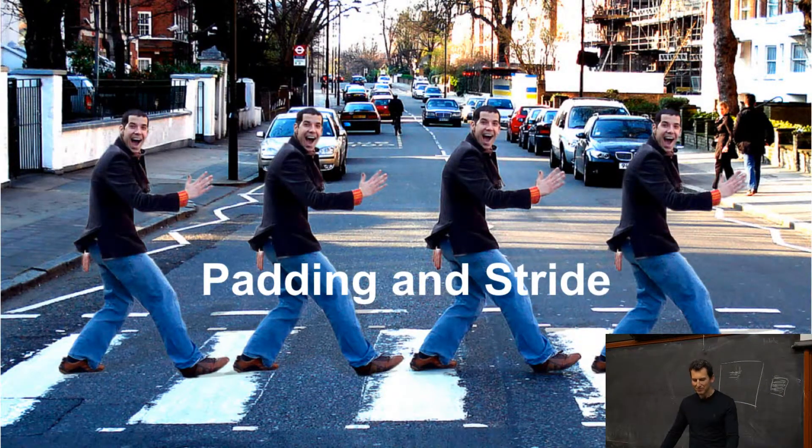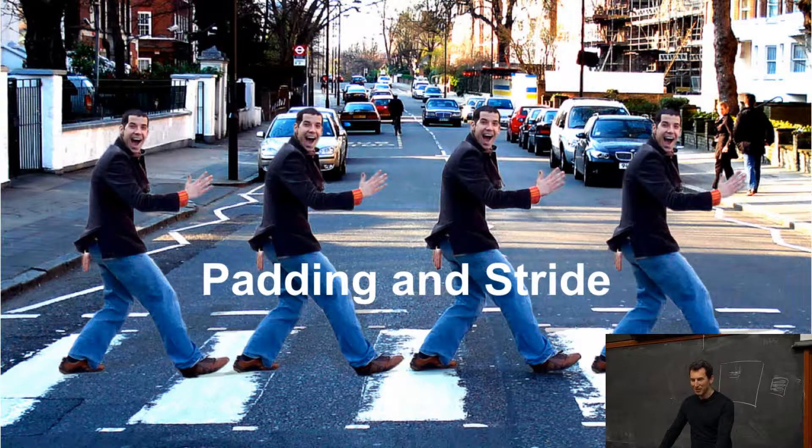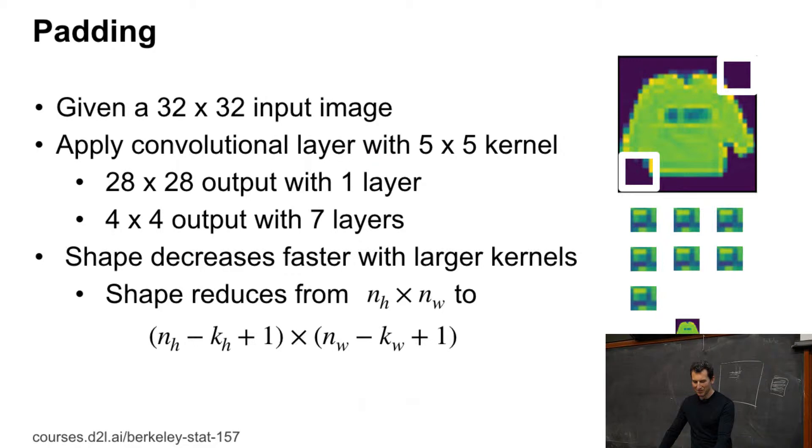Padding and stride. Remember when we do this convolution, our kernel scans over the image.